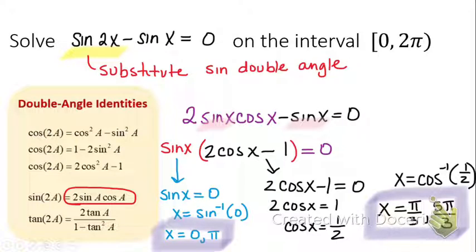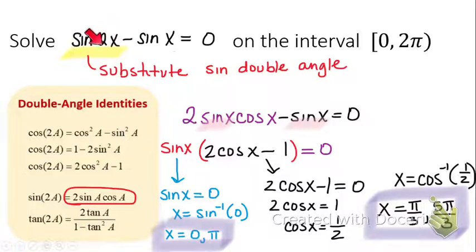Any questions about how we got through this example? So again, if you see an equation that has a double angle — if that x, θ, α, or β is being multiplied by 2 — that's a double angle identity, and you need to do a substitution before you can proceed.